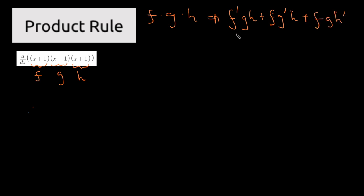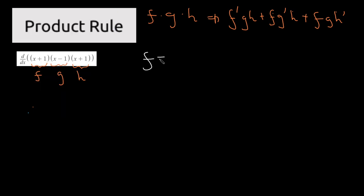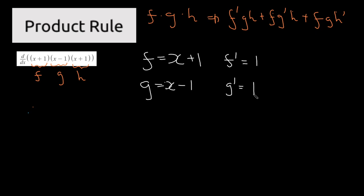Let's define all our terms. f is equal to x plus 1, f prime is equal to 1. g is equal to x minus 1, g prime is equal to 1. h is equal to x plus 1, and h prime is also 1. We've defined each term clearly and now we can write our expression.